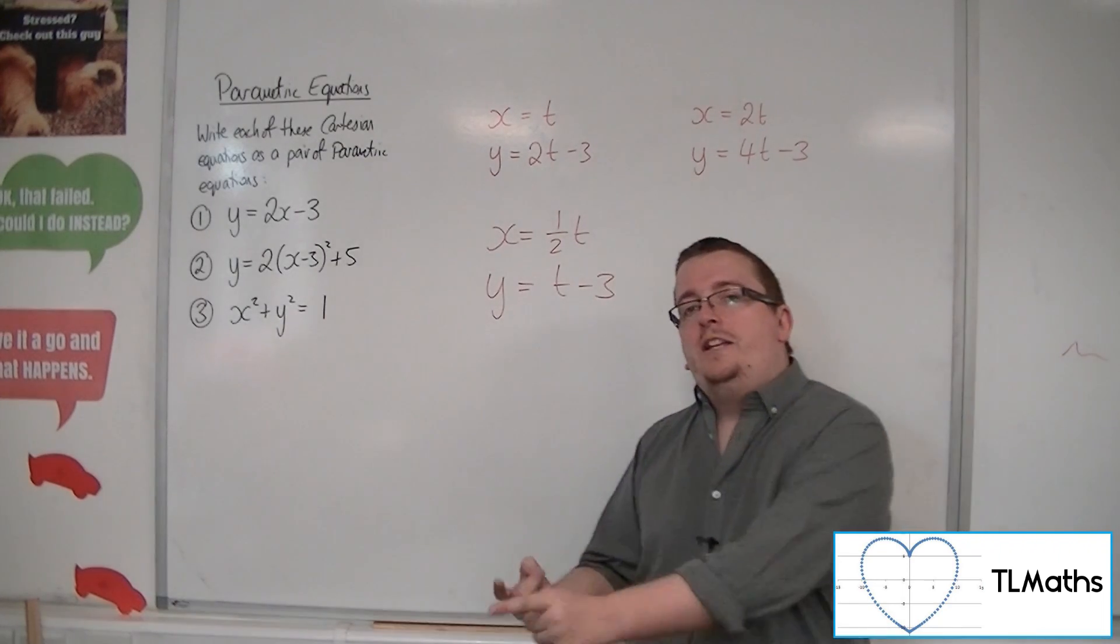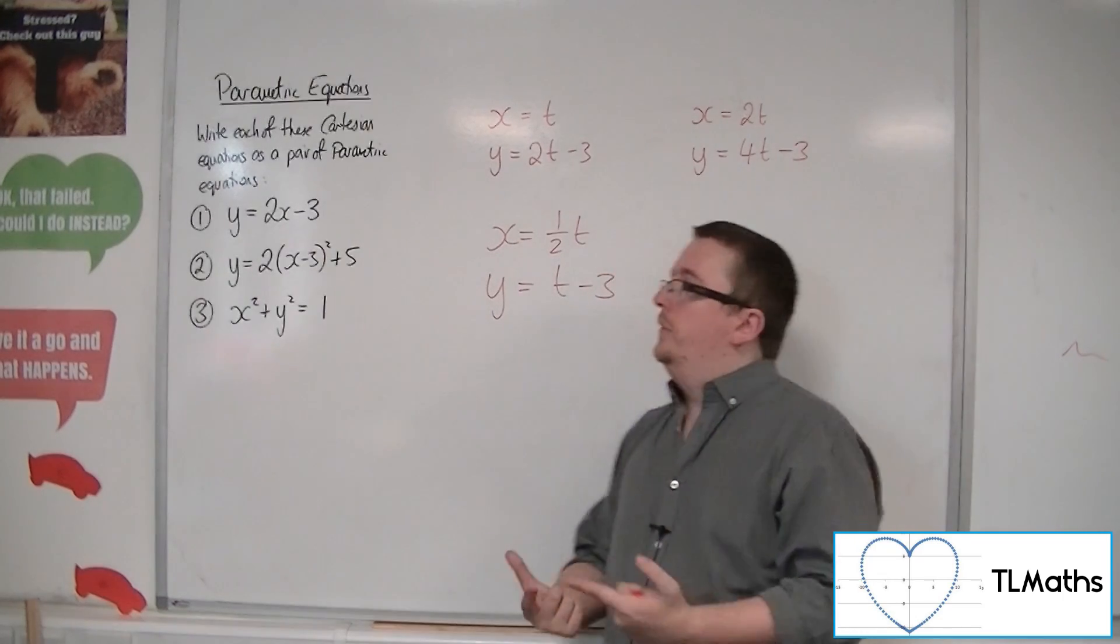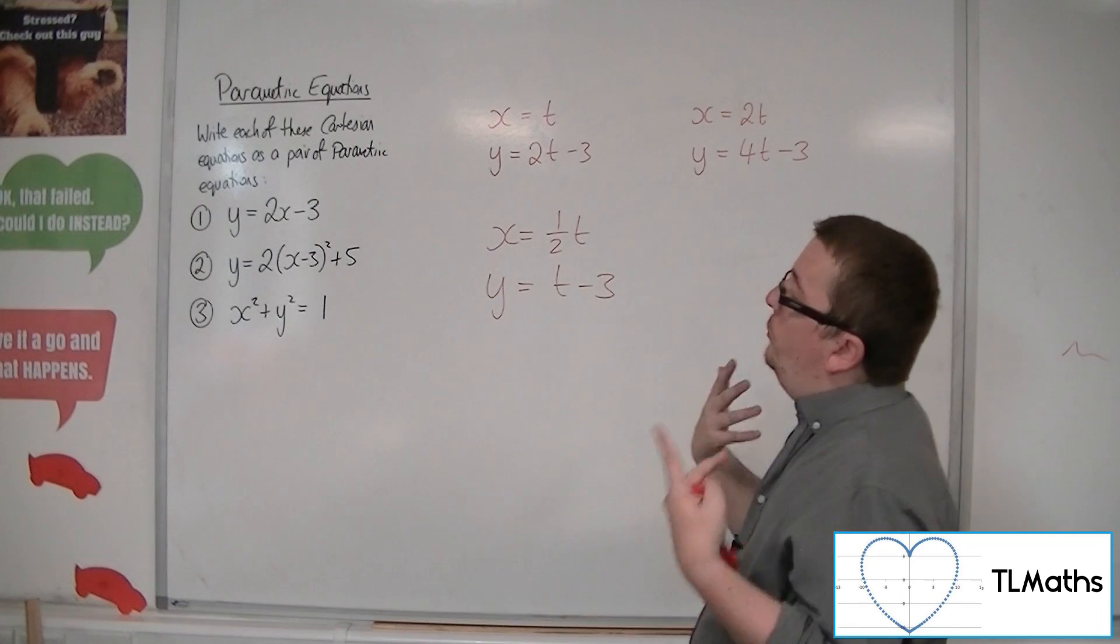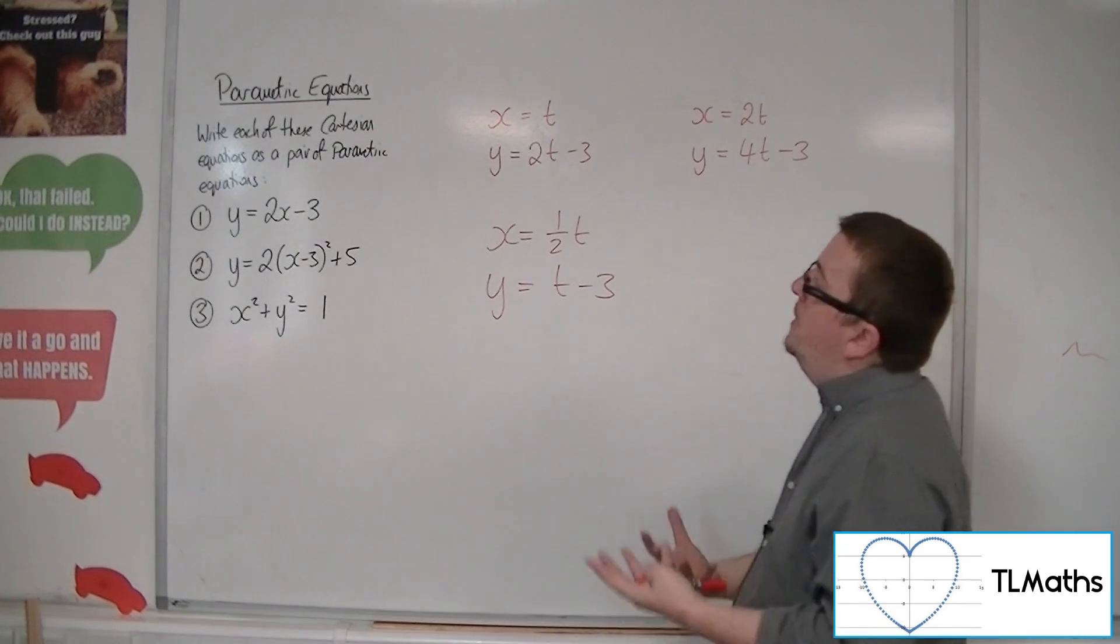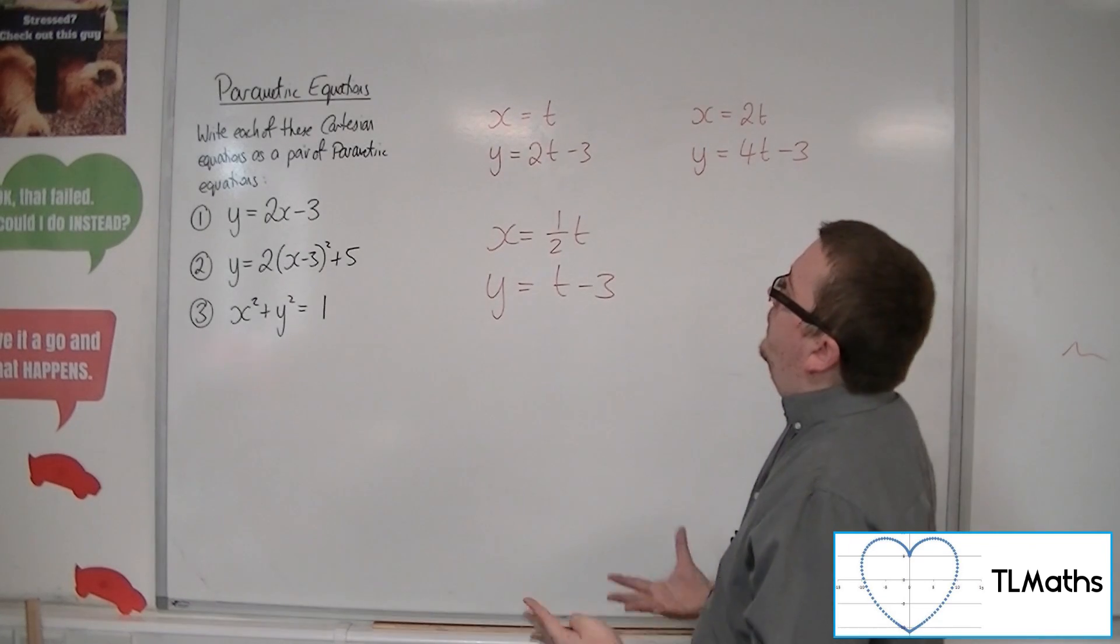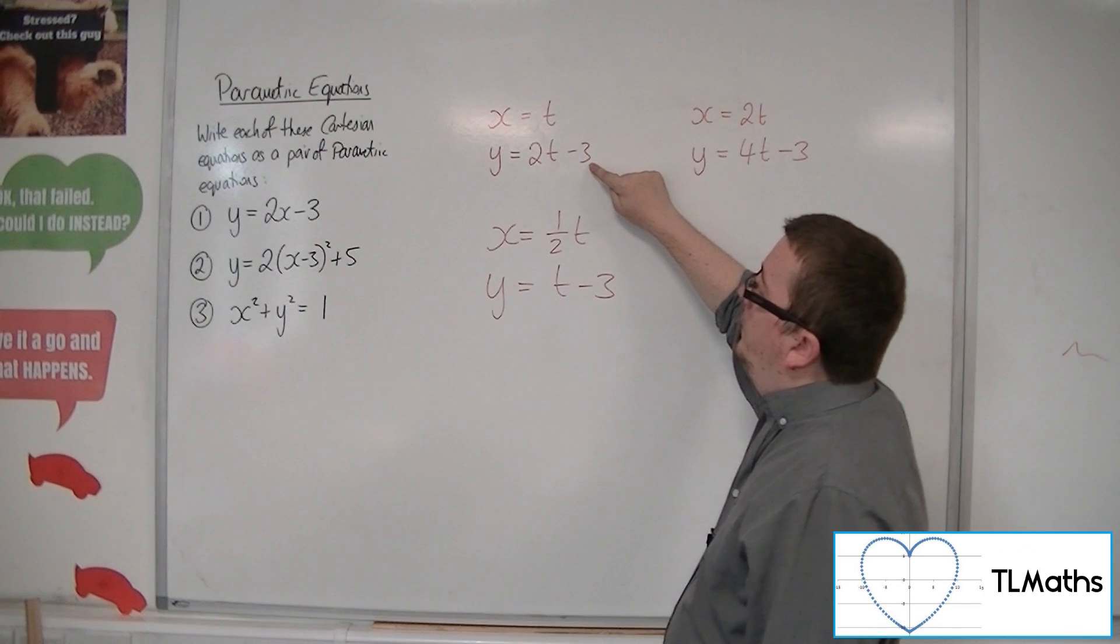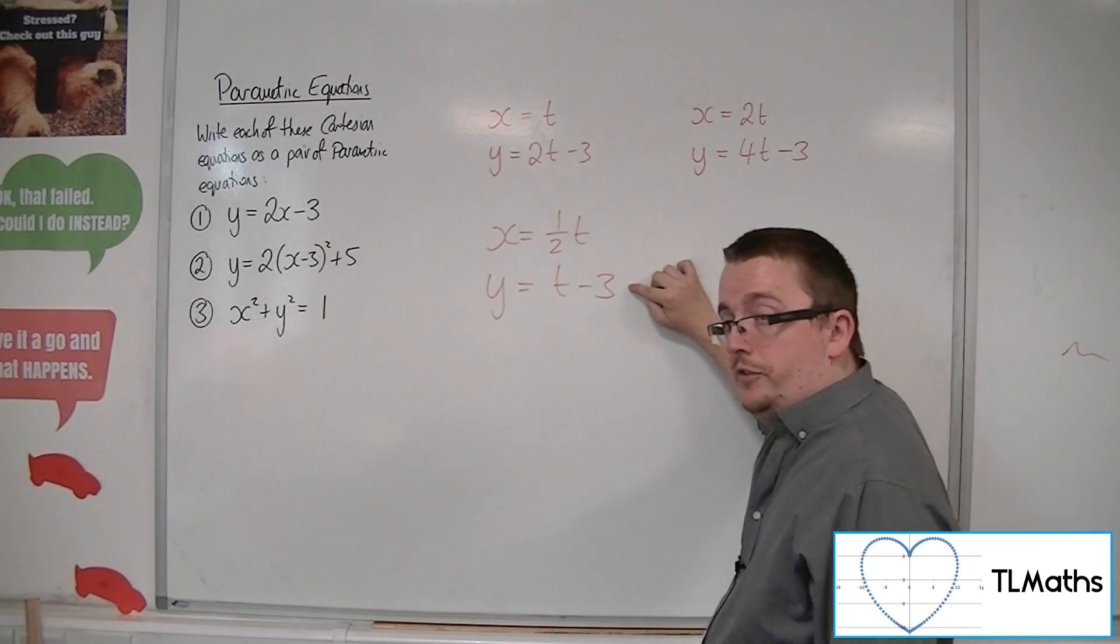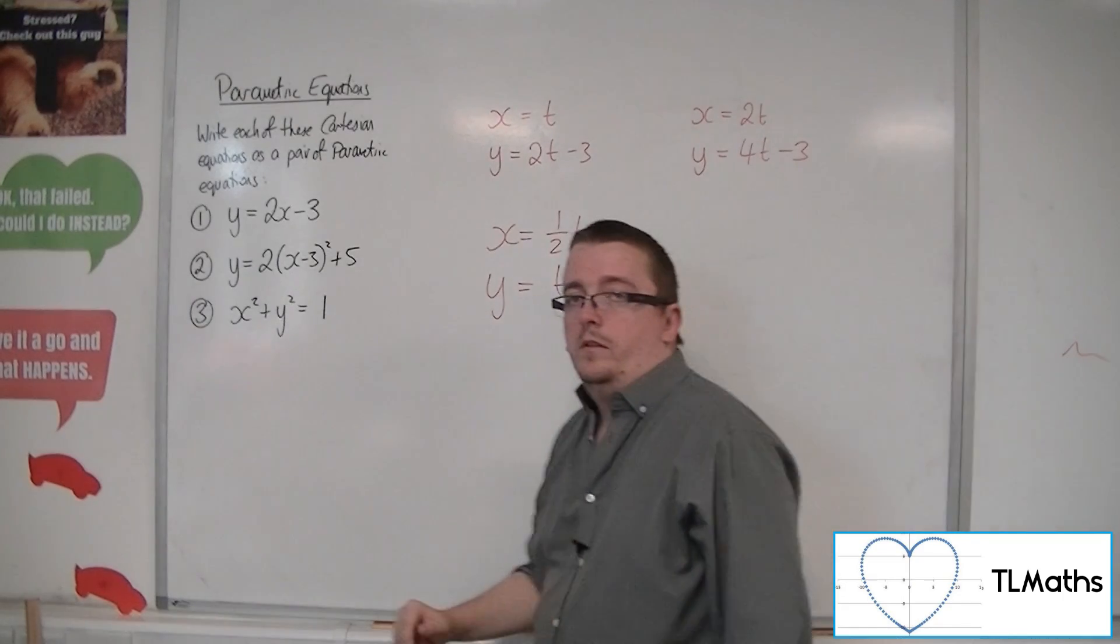...it is for different values of t that you get the coordinates. So when t is 1, for example, if t was representing time, when t is 1 second, I would be at 1 minus 1. But with these, I'd be at 1 half minus 2. And with this, I'd be at 2, 1.